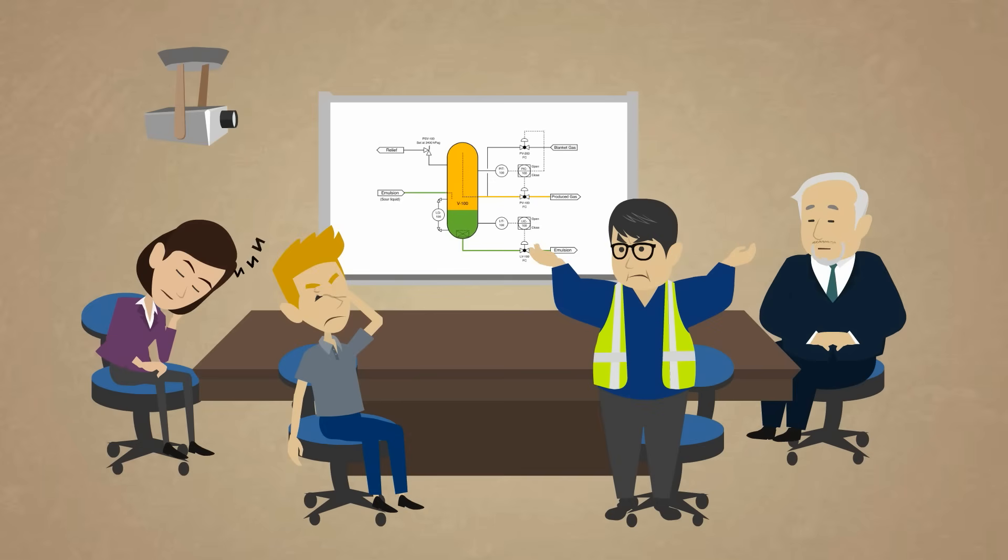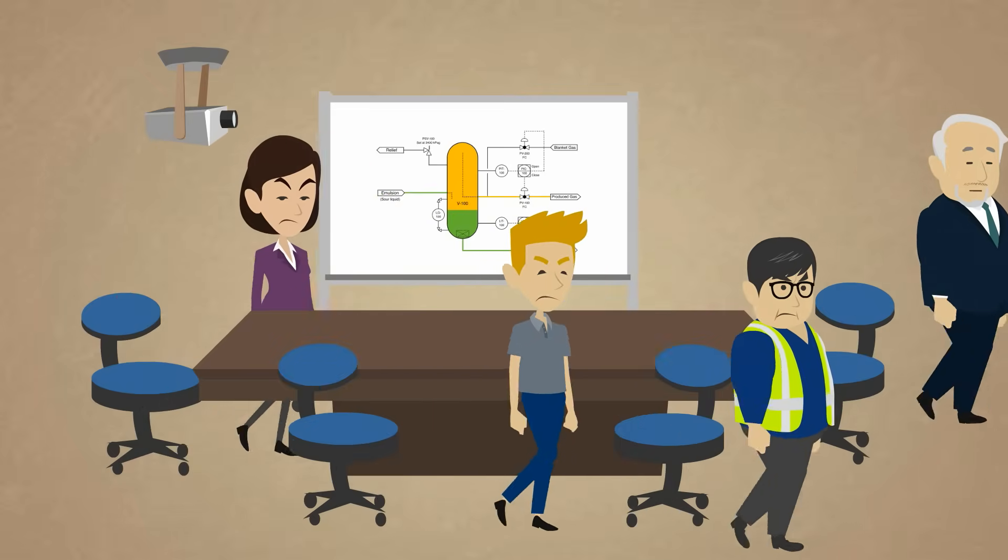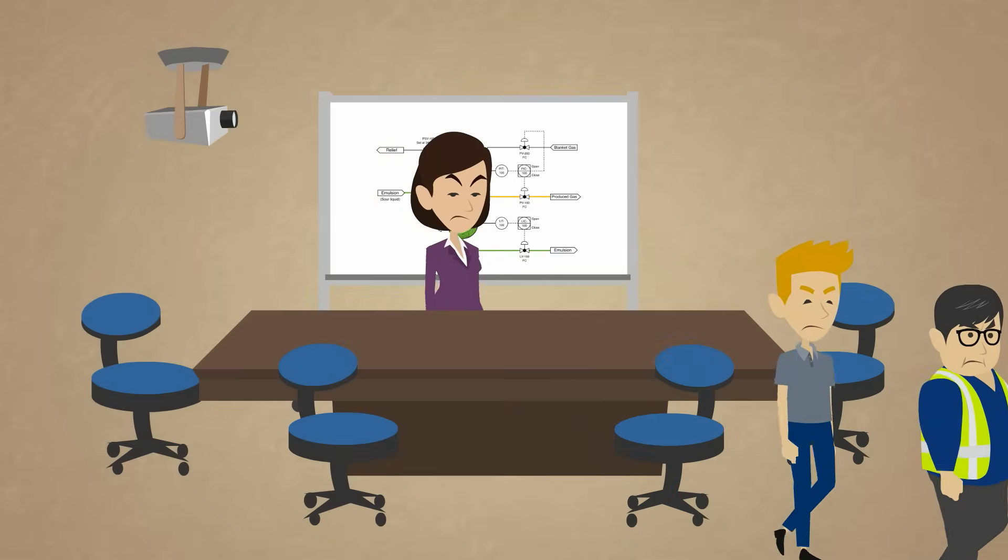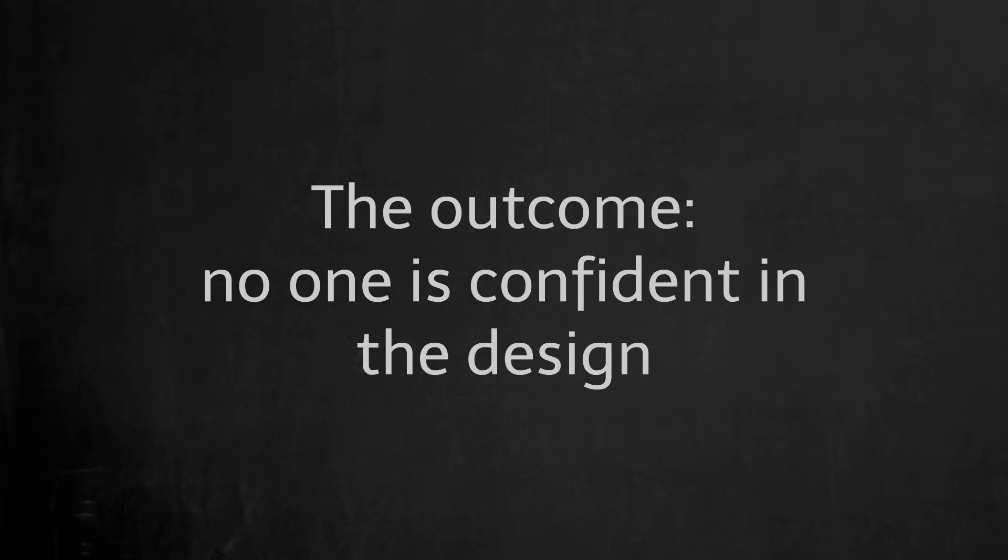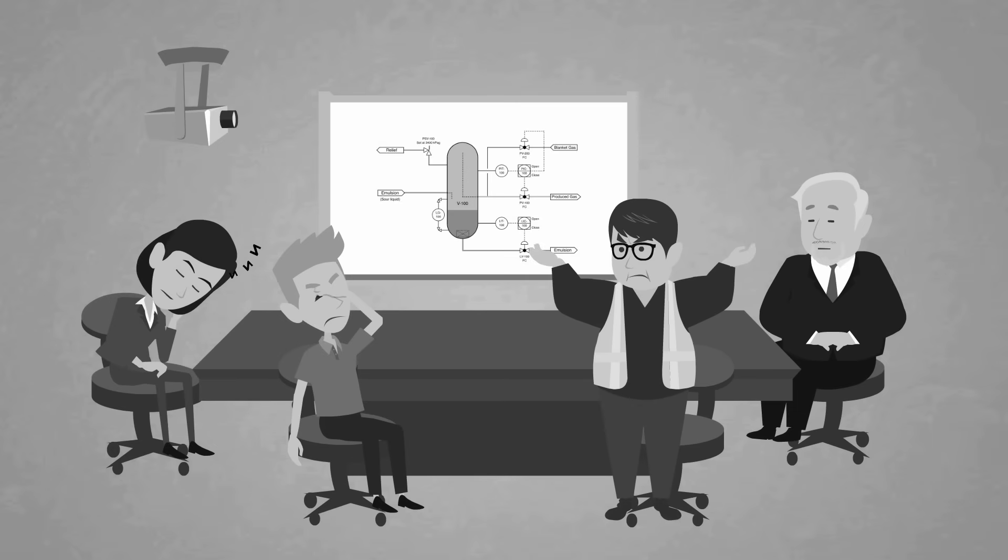By the end of the day, people are still talking but there are no commitments to actions and the process hazard analysis is only half done. Everyone leaves the meeting thinking that this was a waste of time. You know the outcome of a PHA is bad when no one is confident in the design. Why does this happen?